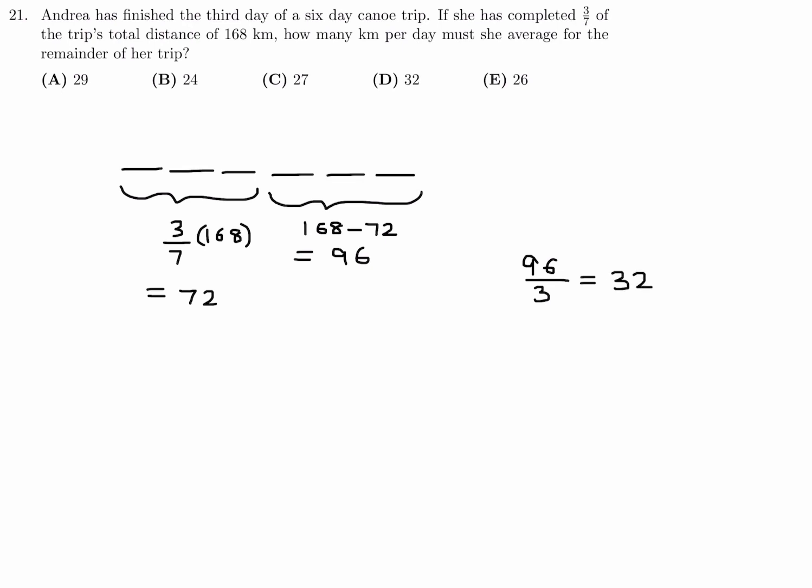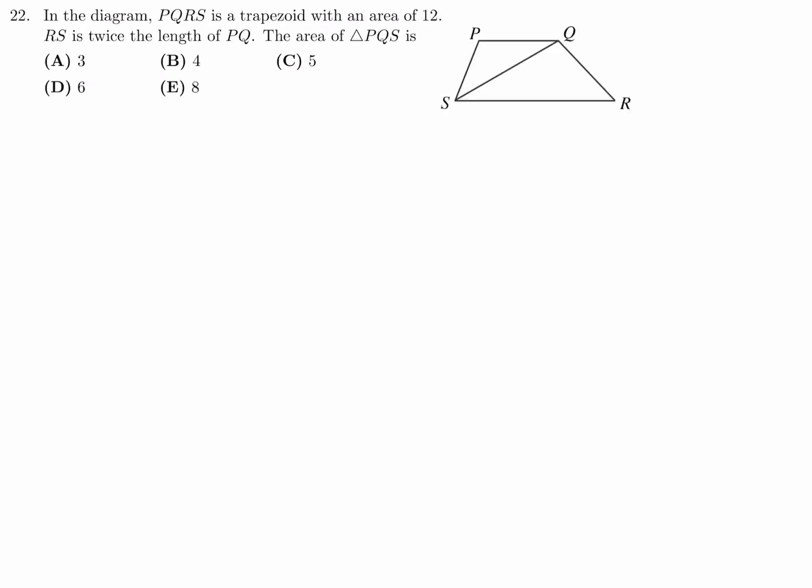So 32 kilometers per day is what she will average for the remainder of her trip. And number 21 is therefore D. In the diagram, PQRS is a trapezoid with an area of 12. RS is twice the length of PQ. The area of PQS is.